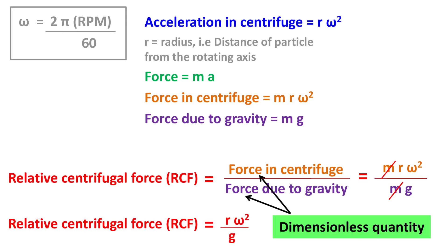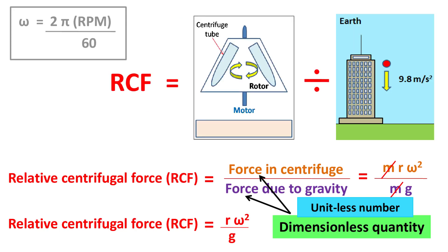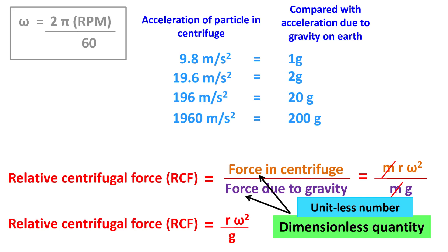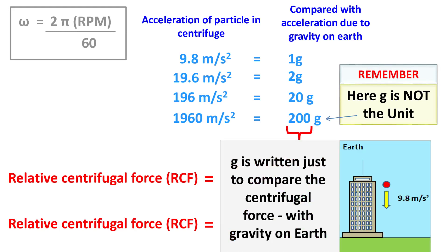Since both sides have the unit of force, they cancel each other. So Relative Centrifugal Force RCF is a unitless number — it doesn't have any dimension. You can imagine RCF as the force in centrifuge divided by force due to gravity on Earth. For example, if the acceleration of a particle in centrifuge is 9.8 meters per second squared, it is denoted as 1g. If it is 196 meters per second squared, it is indicated as 20g. If it is 1960 meters per second squared, it is denoted as 200g. Remember, g is not the unit — it is written just to compare the centrifugal force with gravity on Earth.